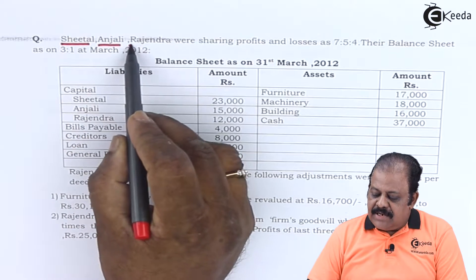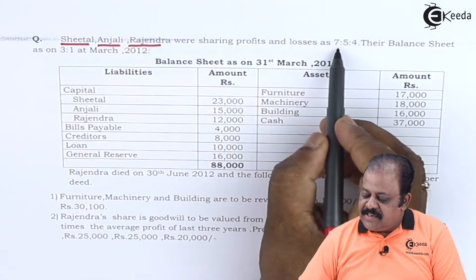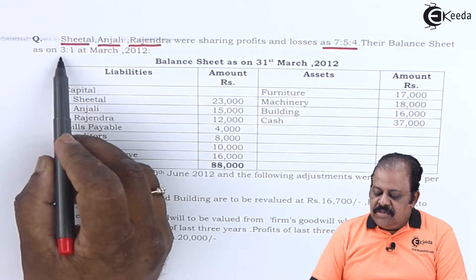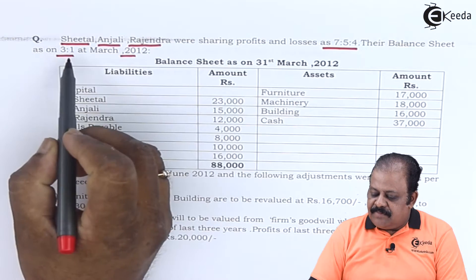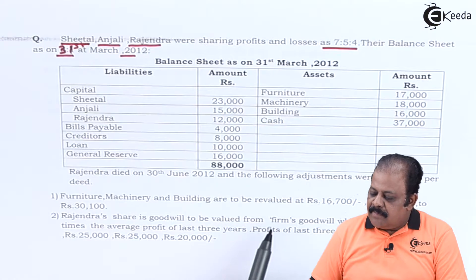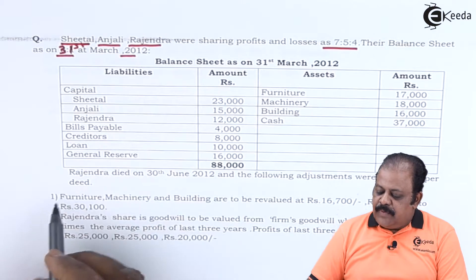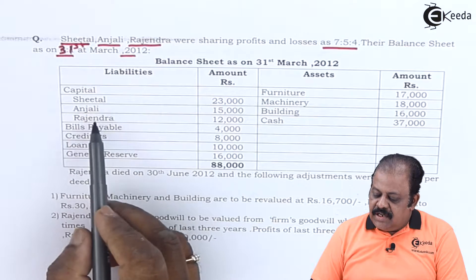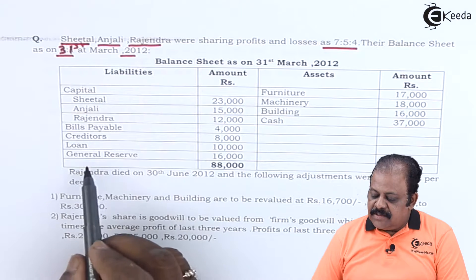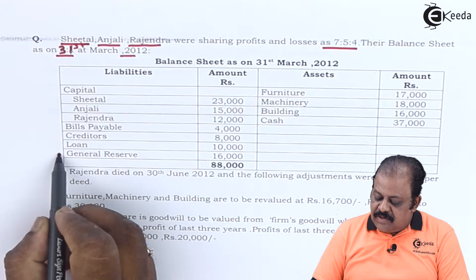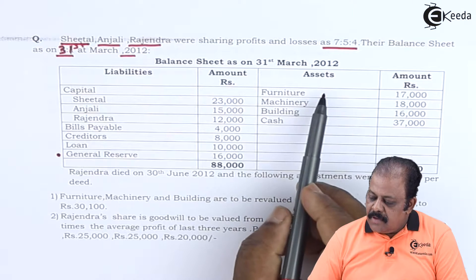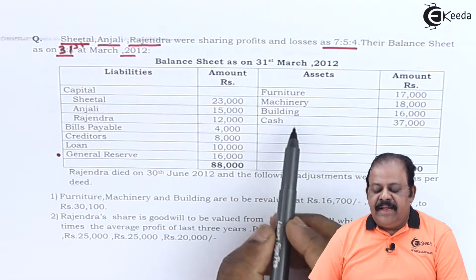Sheetal, Anjali, and Rajendra were sharing profits and losses in the ratio of 7:5:4. Their balance sheet as on 31st March 2012 is given. On the liability side we have capitals of Sheetal, Anjali, Rajendra, bills payable, creditors, loan, and general reserve. On the asset side we have furniture, machinery, building, and cash.